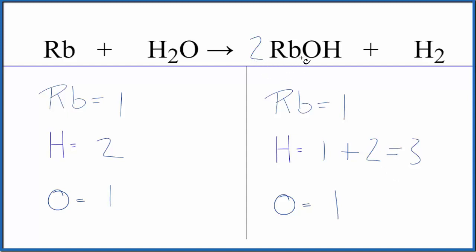Now we have one times two. That gives us two of the rubidiums. For the oxygens, we have one times two. That gives us two of those. For the hydrogens, though, we need to update that because we have the one times two plus the two here in the hydrogen gas. That gives us four.